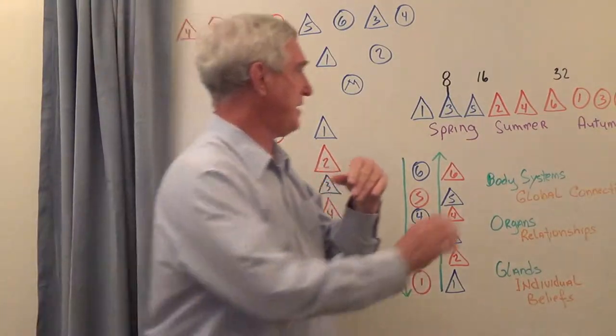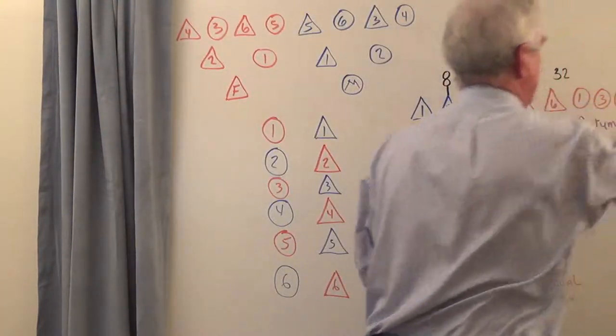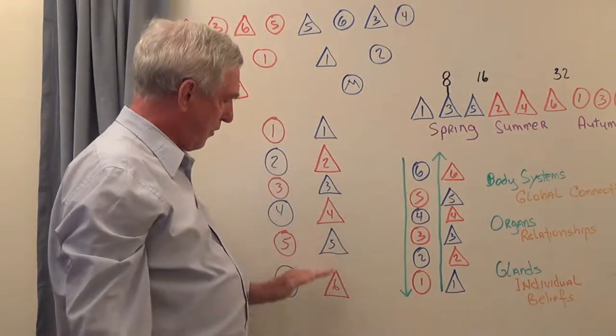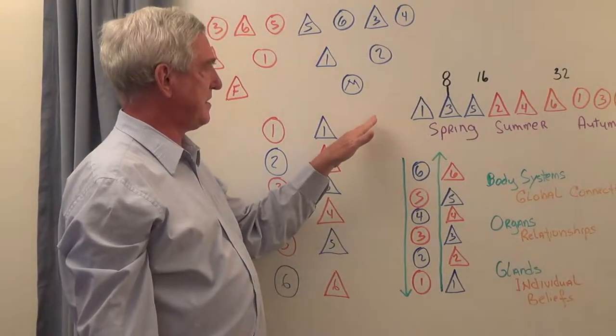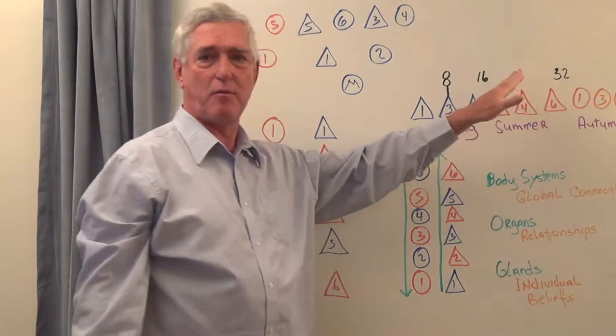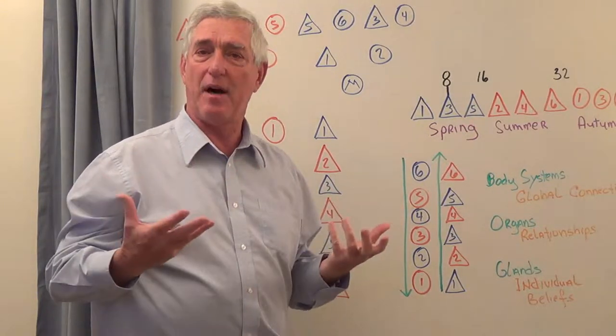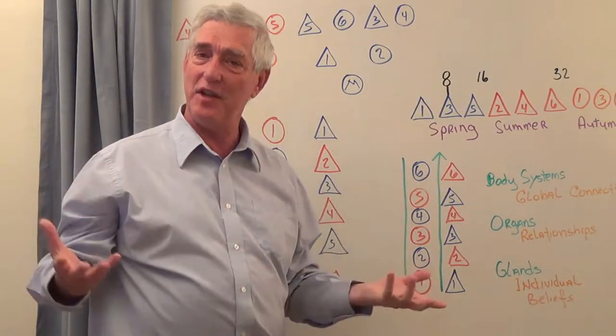Now, there are things that are quite unusual but very useful about this system. For example, in this map here, we're describing how the sequences of the birth order patterns of the six sons, they come in a sequence that is also corresponded to the times of the day and the seasons of the year.